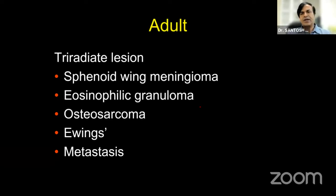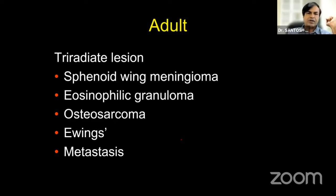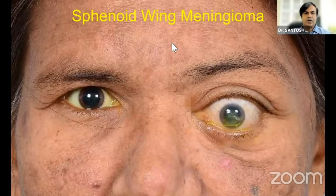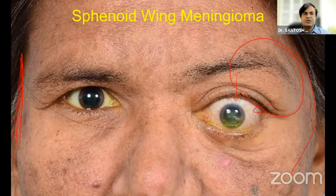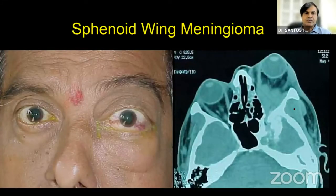The next class of lesions are tri-radiate lesions — centered in the sphenoid wing with extension to the temporal fossa, orbit, and intracranially. The five typical tri-radiate lesions are: sphenoid wing meningioma, eosinophilic granuloma, osteosarcoma, Ewing's sarcoma, and metastasis. This lady presents with proptosis, but also look at the temporal fossa — it is normally flat or concave, but here it is convex. If the temporal fossa is convex and the eyeball is displaced inferiorly and medially, you expect a lesion in the sphenoid wing. On scan you find temporal fossa extension, intracranial extension, and intraorbital extension centered around the sphenoid ring — this is very typical of sphenoid wing meningioma.